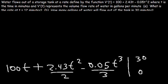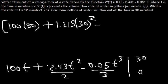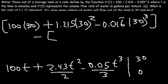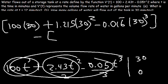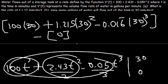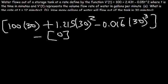So let's plug in 30 first. This is going to be 100 times 30 plus 2.43 divided by 2, that's about 1.215 times 30 squared. 0.05 divided by 3, that's going to be 0.016 repeated times 30 to the third power. And then minus, now we need to plug in 0. 100 times 0 is 0, so the whole thing is 0.